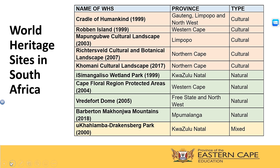Secondly, we have Robben Island, which is located in the Western Cape — also a cultural heritage site. Mapungubwe, in the far northern part of South Africa in Limpopo province, is also a cultural heritage site. Then you have the Richtersveld Cultural and Botanical Landscape, which is in the Northern Cape and is a cultural heritage site. I would just like to stop here — it is not a mixed heritage site; it is a cultural heritage site. The focus is on the culture and how that specific culture interacts with nature. According to UNESCO's website, it is a cultural World Heritage Site.